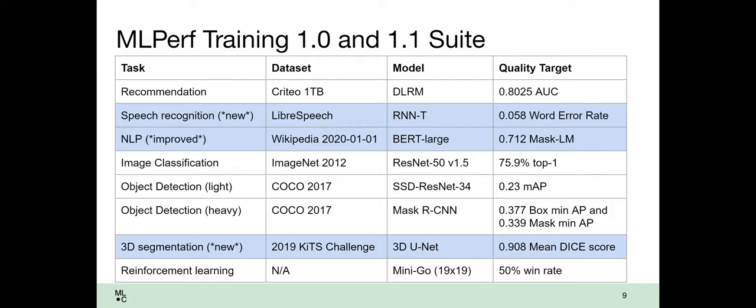When you look at the training suite, this is sort of an inventory of the models, the data sets, and the quality targets that we have for the different training benchmarks. This does not include the three MLPerf HPC benchmarks. You can read about those on our website or talk to Steve. But you can see here that we've got a pretty nice range. We've got recommendation, which is a very different workload. We've got a bunch of convolutional based neural networks for vision, a BERT based NLP model.